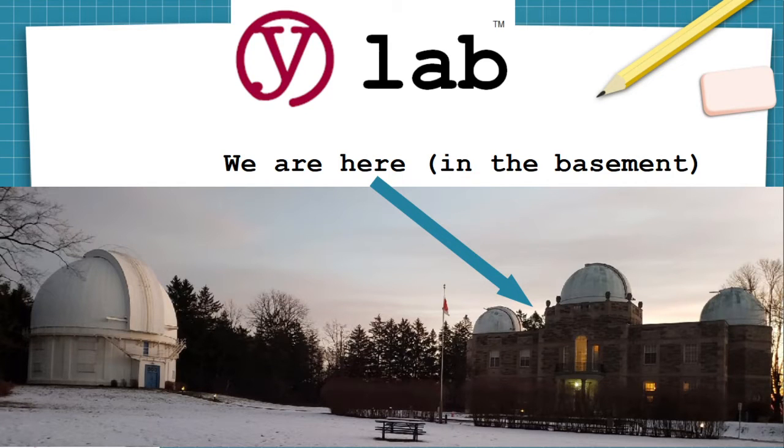Welcome to YLAB, the makerspace located in the basement workshops of the historic David Dunlap Observatory in Richmond Hill, Ontario, Canada, where the main mirror of the giant telescope has its own private elevator so it can be lowered down into the vacuum chamber for maintenance. And yes, there is a vacuum chamber.